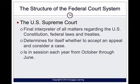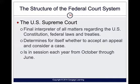The Supreme Court is the final interpreter of all matters regarding the U.S. Constitution, federal laws, and treaties. They have discretionary review, meaning they determine whether they want to hear a case. There is something called the Rule of Four — if four Supreme Court justices agree to hear a case, it will be reviewed. The court session runs from October through June, giving July, August, and September off.